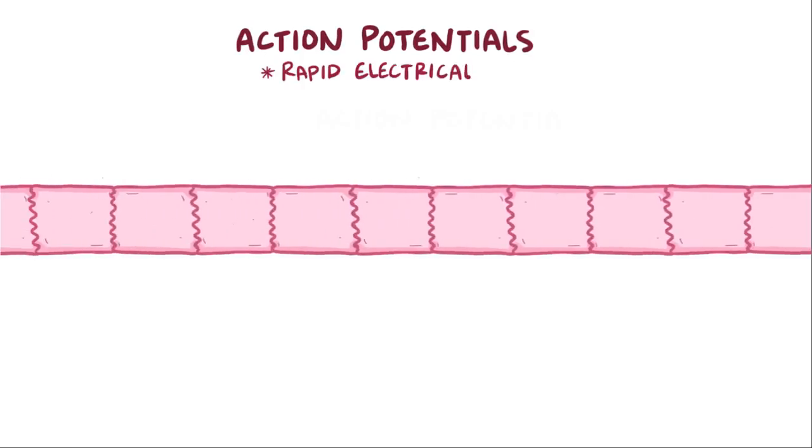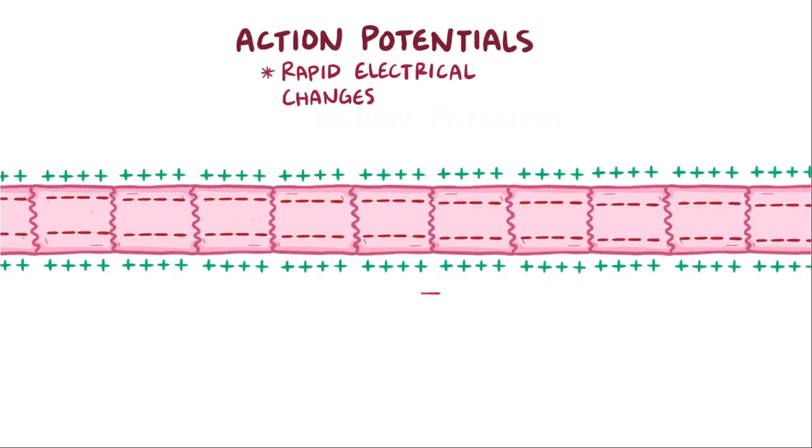Action potentials are the rapid electrical changes that happen across the membrane of certain cells, and often propagate from one cell to an adjacent cell. Cells in the heart communicate this way.